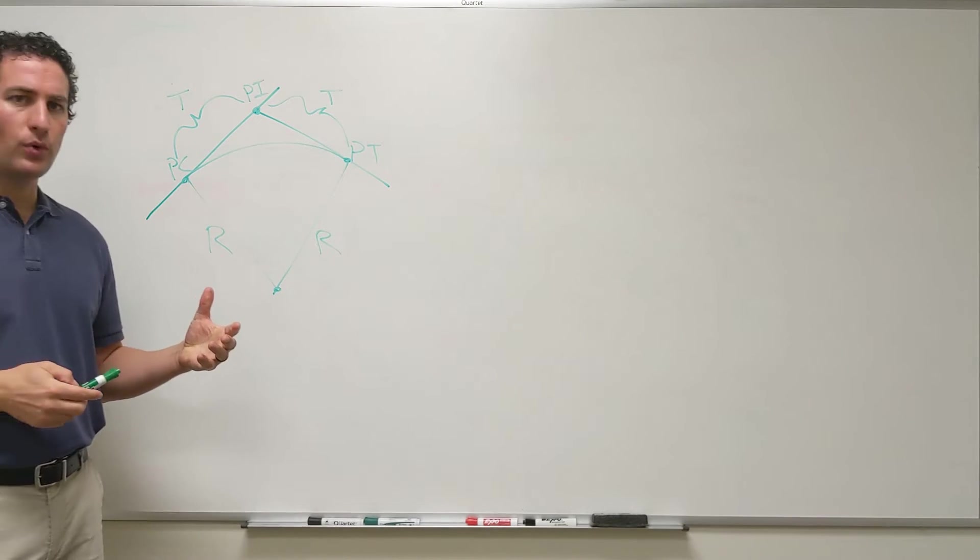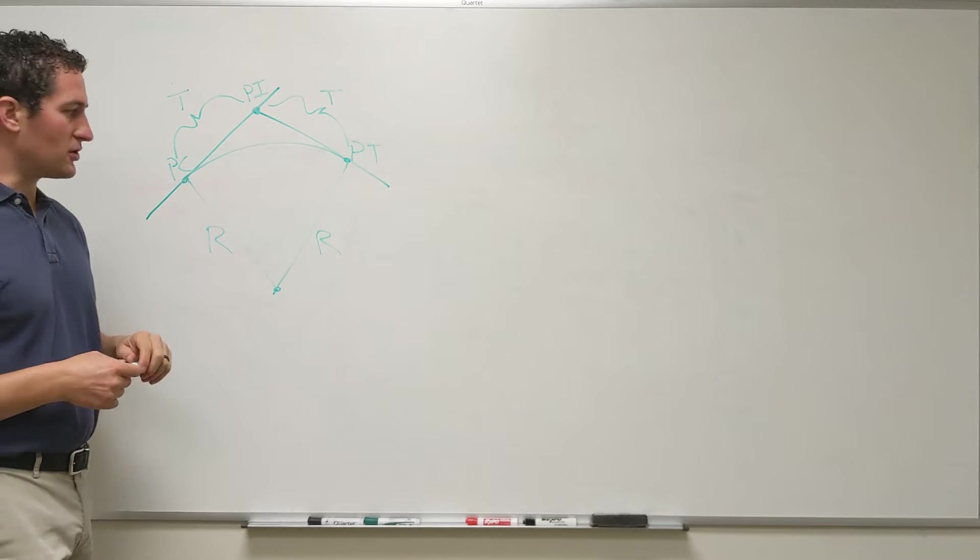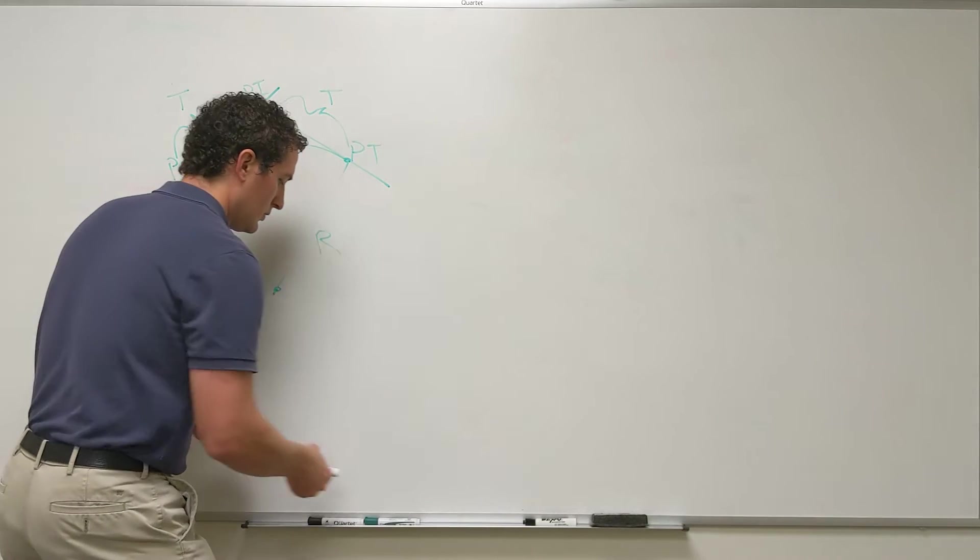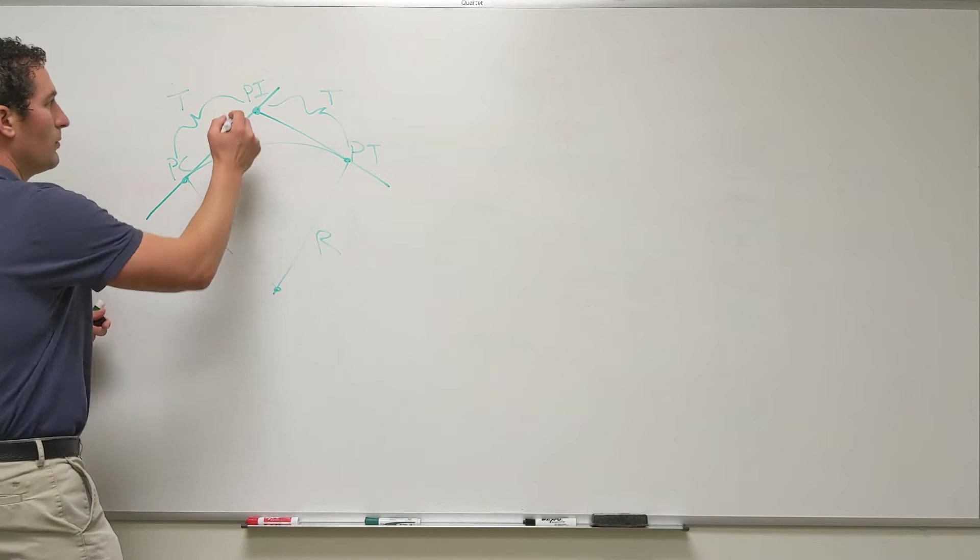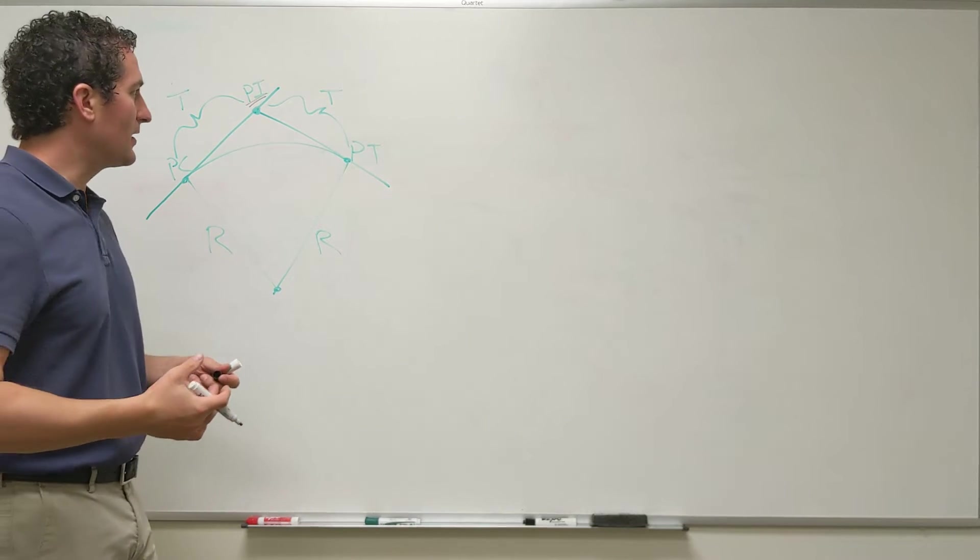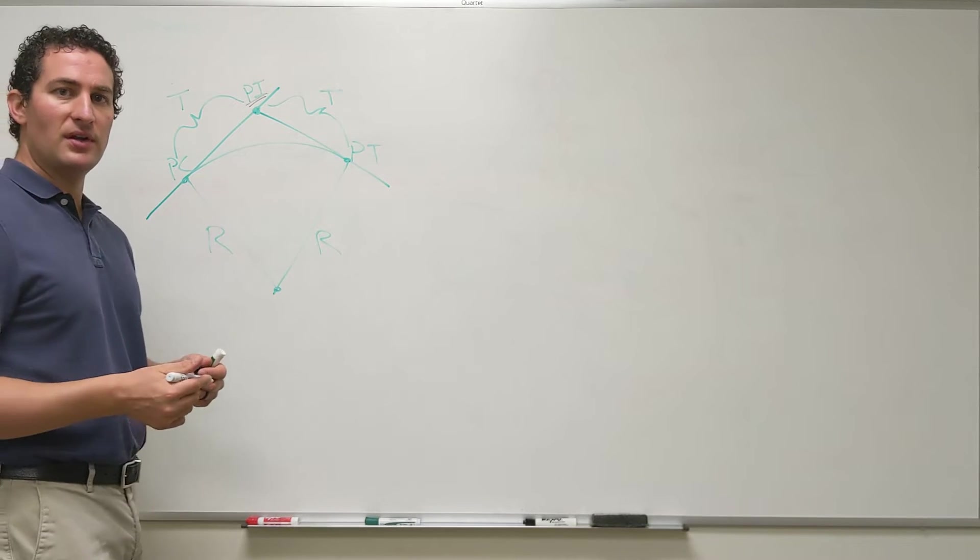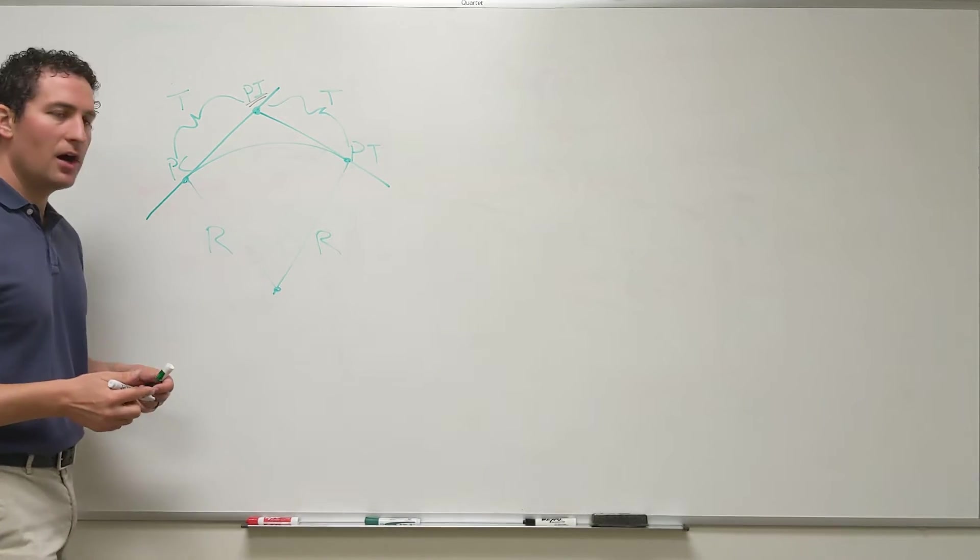And so it's very common for stationing to be given at the point of intersection. So one of our givens will be this point of intersection. We'll be told the stationing of that PI and we're told to find the stationing of the rest of the curve, or maybe find the point of tangency, the PT, of this curve.